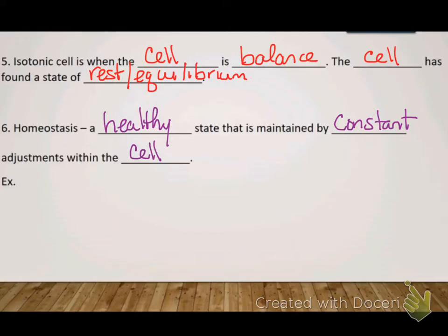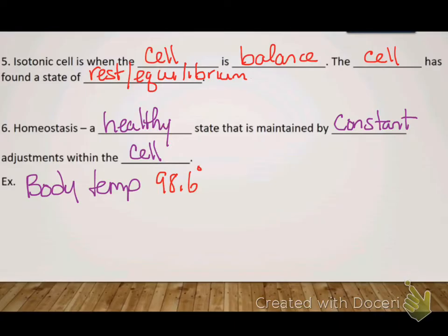An example of homeostasis that you would know right now is our body temperature — 98.6 degrees. When you are hot, what does your body do? It makes an adjustment by sweating. When you sweat, the water on your skin cools your body down and lowers your body temperature. In reverse, when you're cold, your body shivers and you get goosebumps — your hair stands up and traps air close to your skin to keep it warm.